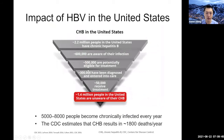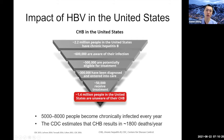Some U.S.-specific data highlights this same cascade issue. Among the 2.2 million adults in the U.S. with hepatitis B, only a fraction are aware of their infection, and particularly only a much smaller fraction are actually on antiviral therapy. This drives home the importance that some of the complications of hepatitis B are preventable, but it really relies on timely diagnosis, timely linkage to care, and timely treatment to prevent disease progression and downstream liver-related complications.